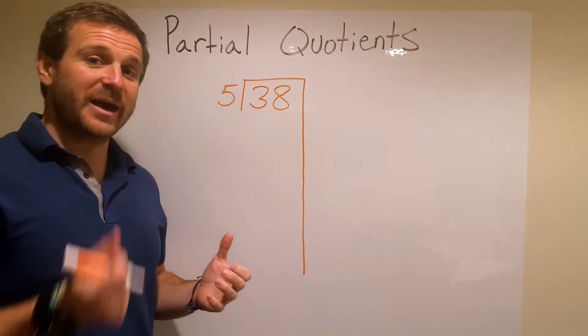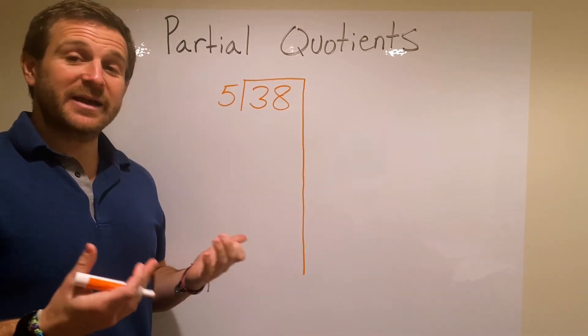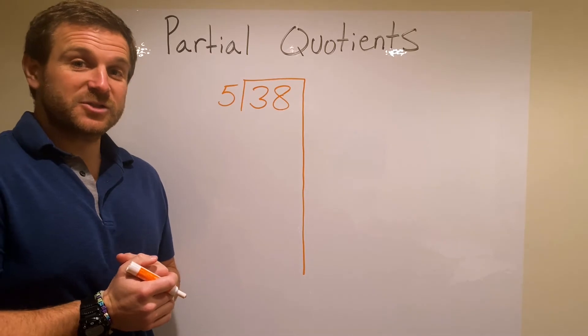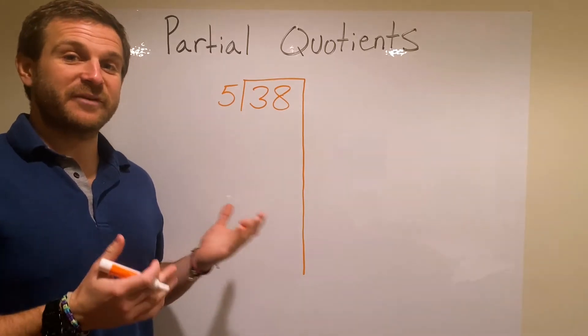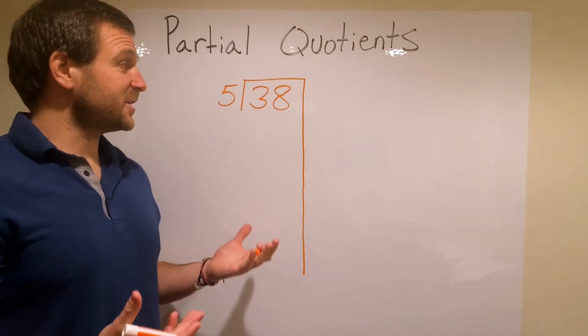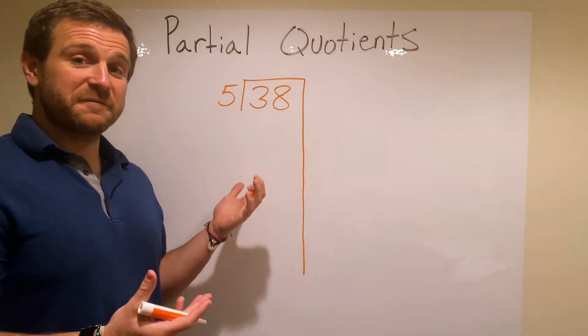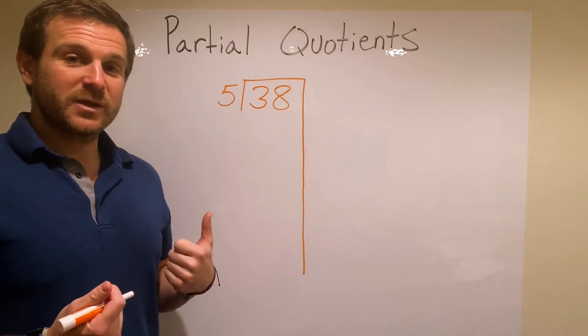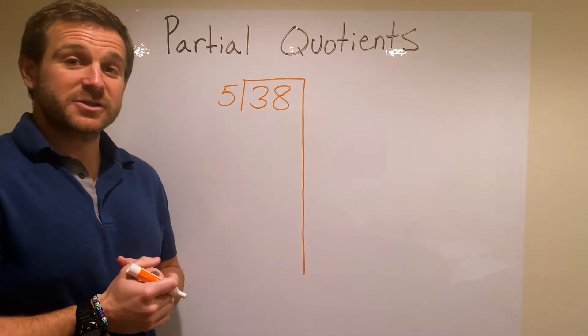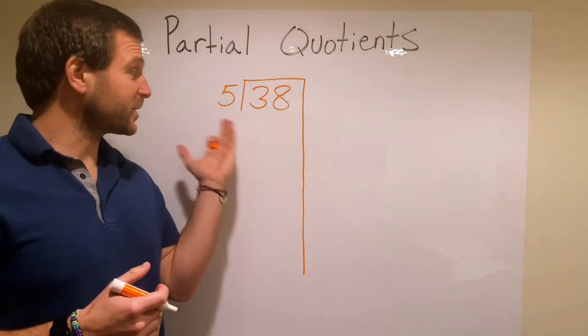So I don't need to know how many times 5 goes into 38. I just need to know how many groups of 5 I can take away. So they can go with anything they know. Let's think through our multiplication of 5. I could do one group of 5, which is 5. I can do 2 groups of 5, which is 10. So I'm going to go with that.